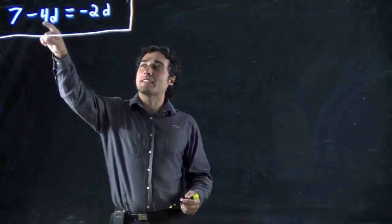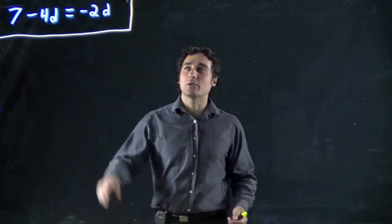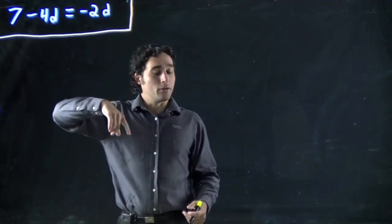Hi again. This time we're going to be solving 7 minus 4d equals minus 2d, and as always we want to get the variable on its own.